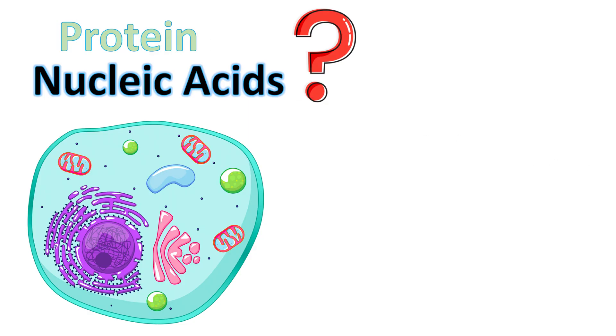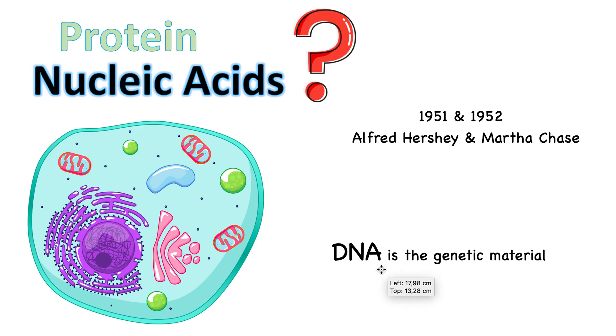So ultimately there were these two people in the 1950s, Alfred Hershey and Martha Chase. So Hershey and Chase was the name of the experiment. They did an experiment where they proved that DNA was the genetic material and not protein.